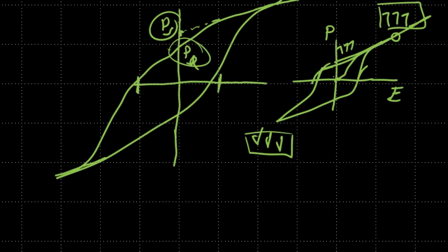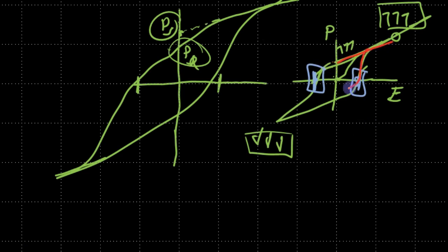There's another point I'd like to mention: where the polarization vector crosses the zero marker, for an applied electric field we have apparently zero polarization. This refers to what is called the coercive field of a piezoelectric or ferroelectric material, denoted E_C. It's the field which causes major switching to happen in the material.